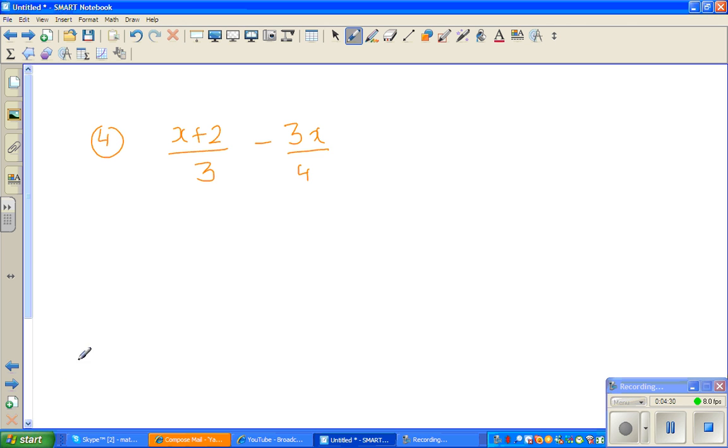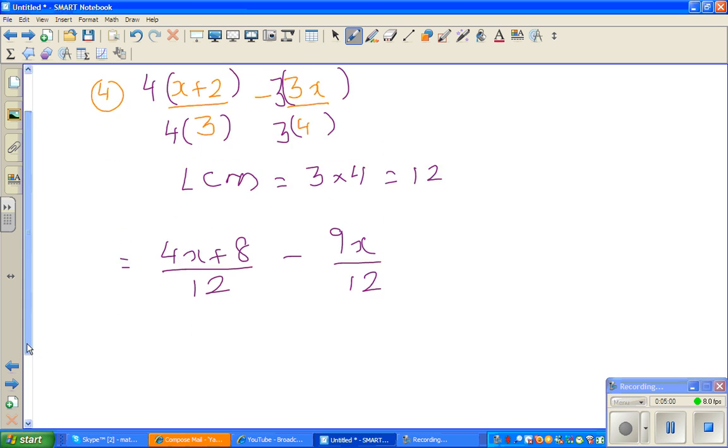Can we do one more? Yeah. So this is, again here the LCM is 3 times 4 which is 12. So I want to make both the denominators 12. So I am going to multiply this with 4, and here multiply with 3. So this becomes 4x plus 8 over 12 minus 9x over 12.